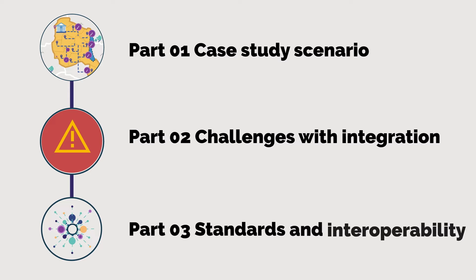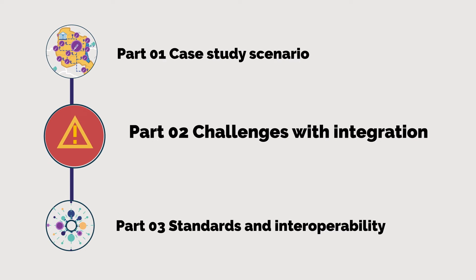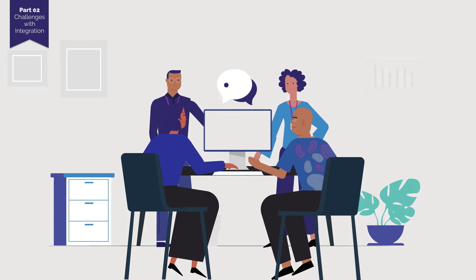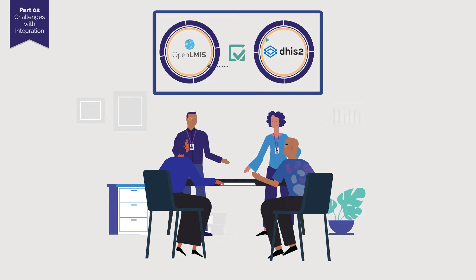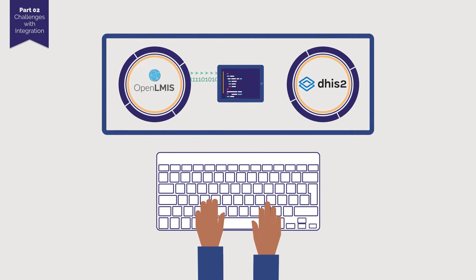In Part 1, we saw the challenges faced by health system managers trying to make digital health applications work for their health programmes, and left off with Lucy and Isaac struggling to get their applications to exchange data. Now, in Part 2, we will examine the way Lucy and Isaac initially try to solve this data exchange challenge. When talking to the Ministry's software development team, Isaac and Lucy learn that they can directly integrate the two applications — they will need to write custom code between the applications to translate how the data is being described by each application, using a bi-directional connection.